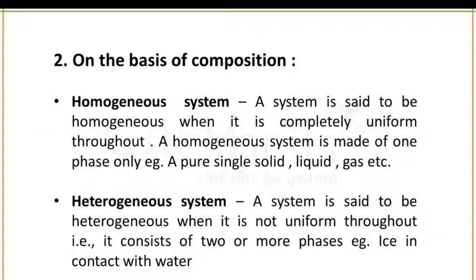The second basis of classification is composition. A system is said to be homogeneous when it is completely uniform throughout — 'homo' means same — it is made up of only one phase. Example: a pure single solid, liquid, or gas. A heterogeneous system — 'hetero' means different — contains different phases; it is not uniform throughout and consists of two or more phases. Example: ice in contact with water.